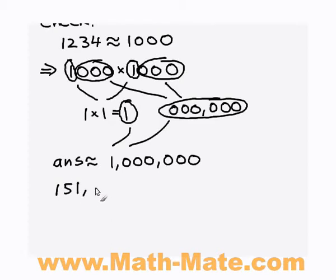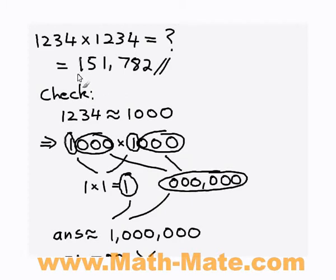So you'd expect our answer to actually be bigger than our estimated answer of a million. So you'd expect our answer to be bigger than a million. Now we got 151,000. Now that's a lot smaller than a million. So this probably means we've got the wrong answer. So let's cross this out.